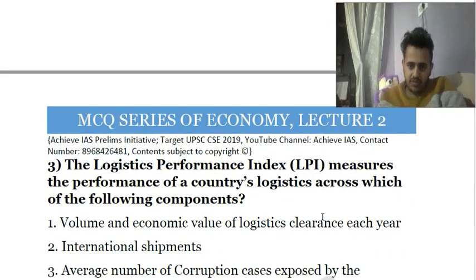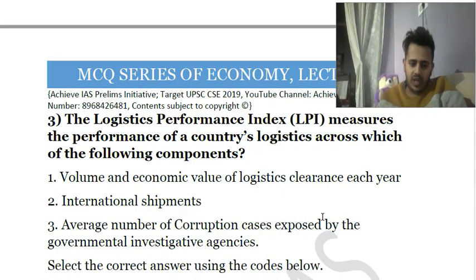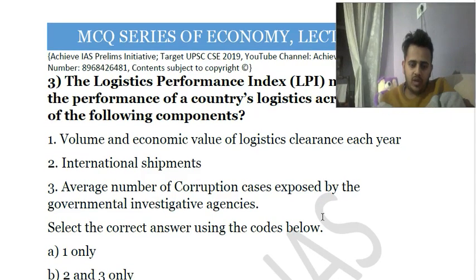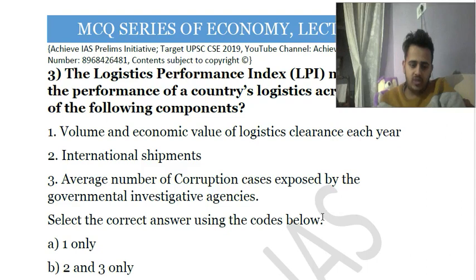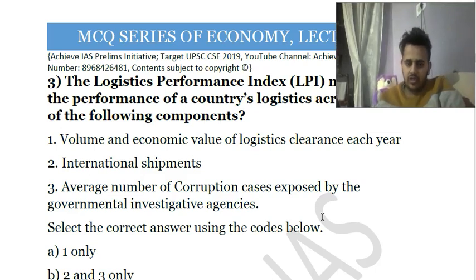Third question: The Logistics Performance Index measures the performance of a country's logistics across which of the following components? — (1) volume and economic value of logistics clearance each year, (2) international shipments, (3) average number of corruption cases exposed by government investigation agencies. Statements (1) and (3) have no link with the Logistics Performance Index; the only correct statement is (2) — international shipments. The answer is (d): second only.